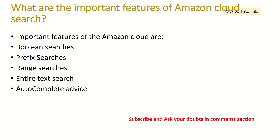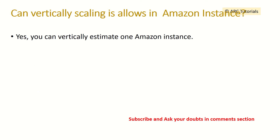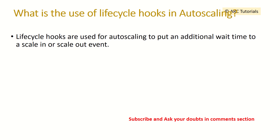What are the important features of Amazon CloudSearch? Some important features are boolean searches, prefix searches, range searches, entire text search, and autocomplete. Can vertical scaling be done on an Amazon instance? Yes, you can vertically scale an Amazon instance. What is the use of lifecycle hooks in auto scaling? Lifecycle hooks are used in auto scaling to put an additional wait time to a scale-in or scale-out event.